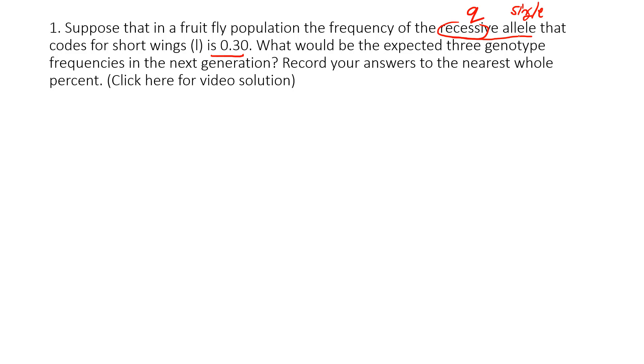We know that because it says allele, so we'll write that down. Q equals 0.3. Now what they're asking is: what are the expected three genotype frequencies in the next generation? We have our formula P squared plus 2PQ plus Q squared equals 1, or 100 percent of the population.